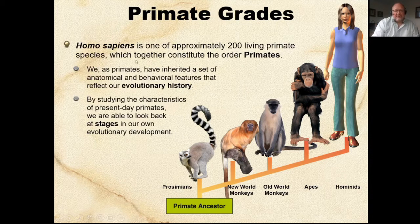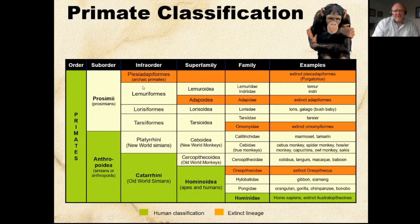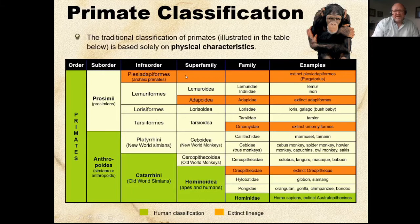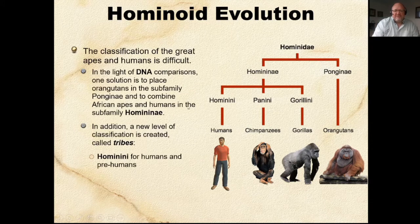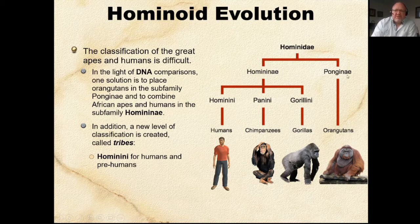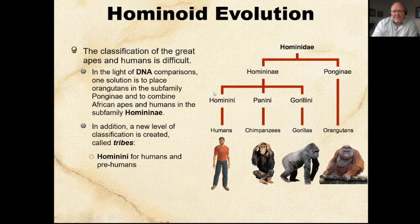There are currently about 200 living primate species. For the exam, you need to know that there are five different types. We have Hominidae, then hominids, and then the hominins. The hominids include the orangutan, but the orangutan split off from the hominin tree much earlier — that's the Ponginae. Then the hominins: Gorillini became today's gorillas, and Panini became today's chimpanzees and bonobos. Homininae became Hominini, which includes Australopithecus, the Homos, and eventually Homo sapiens.